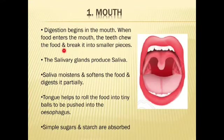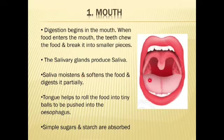Now, the mouth — food begins in the mouth. It is broken into smaller particles by our teeth. The salivary glands produce saliva, which moistens and softens the food and begins to digest it.